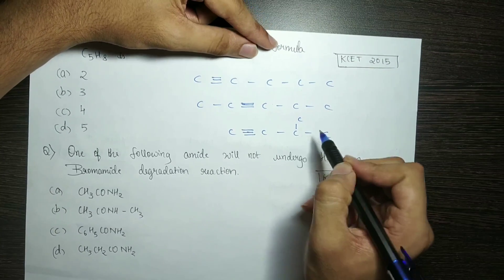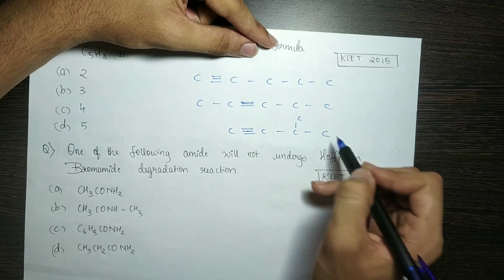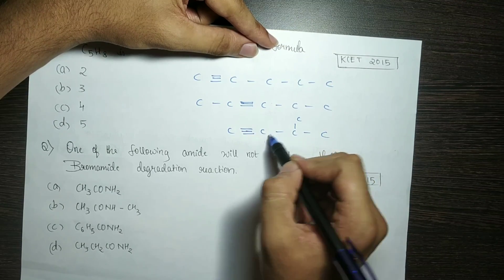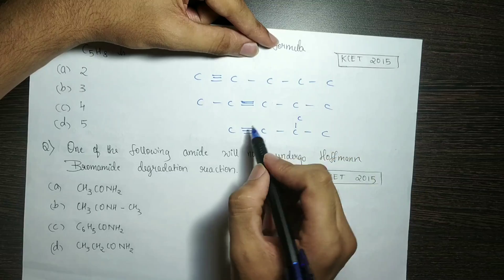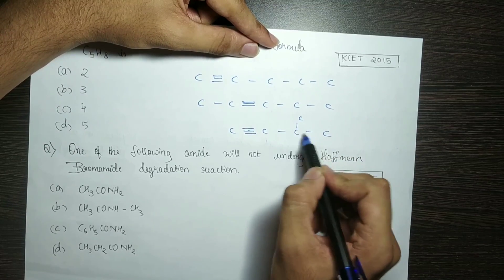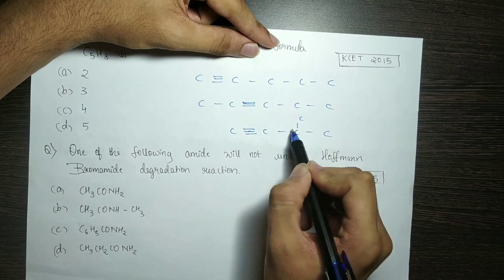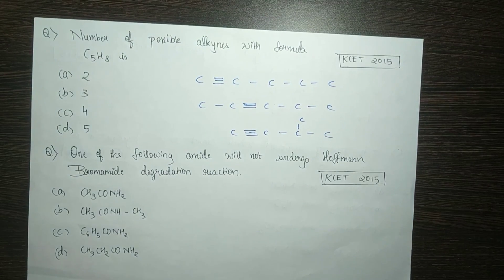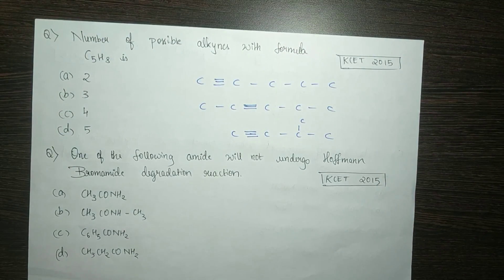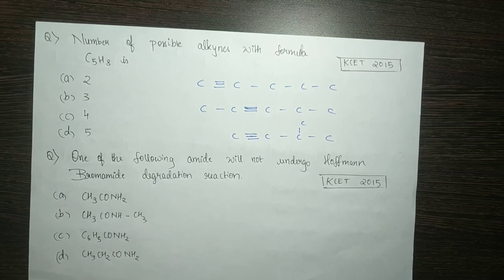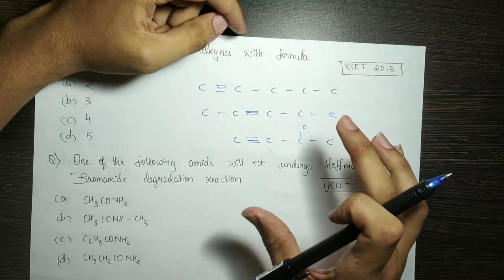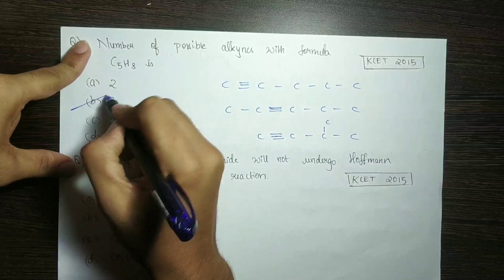It's a structure with branching. But it's not valid branching because carbon has 5 bonds — 1, 2, 3, 4, 5 — that's not allowed. So in the final count, there are three structures.